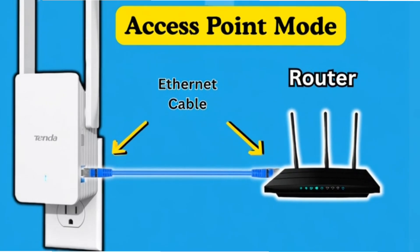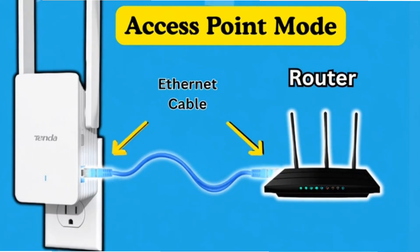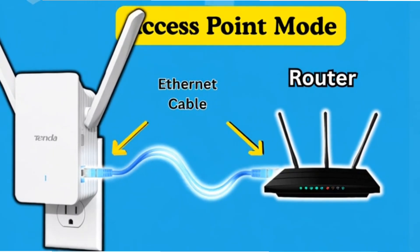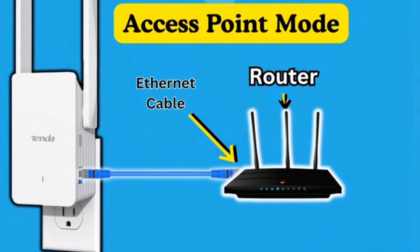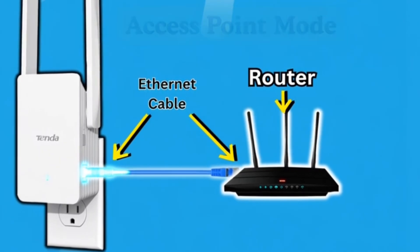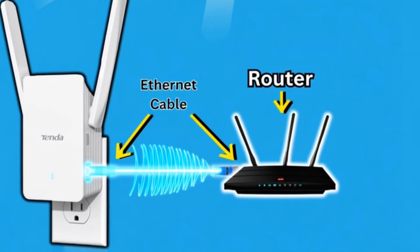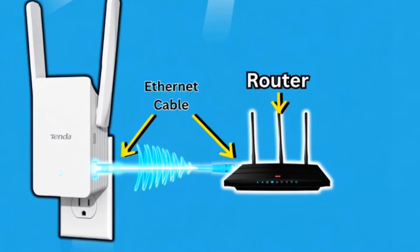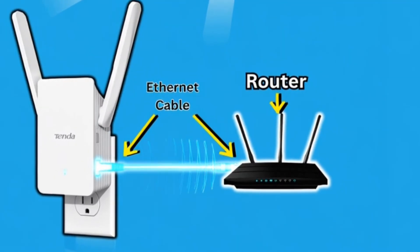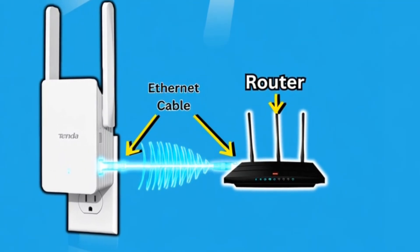Next comes access point mode. In this mode, the extender or repeater is connected to the router by Ethernet cable, and it creates a new Wi-Fi access point using that wired backhaul.